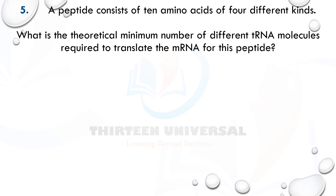Next question: a peptide consists of 10 amino acids of four different kinds. What is the theoretical minimum number of different tRNA molecules required to translate the messenger RNA for this peptide? A peptide of 10 amino acids of four different kinds means there are four types of amino acids — some may appear multiple times, for example glutamic acid four times, valine four times, and asparagine two times.